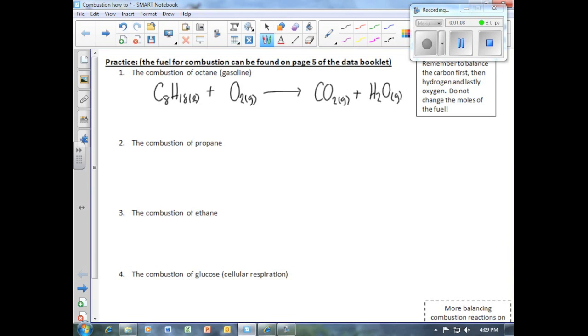The first step in balancing any combustion reaction is to divide the equation into two halves. Everything on the left-hand side of the arrow are called the reactants. Everything on the right-hand side of the arrow are called the products.